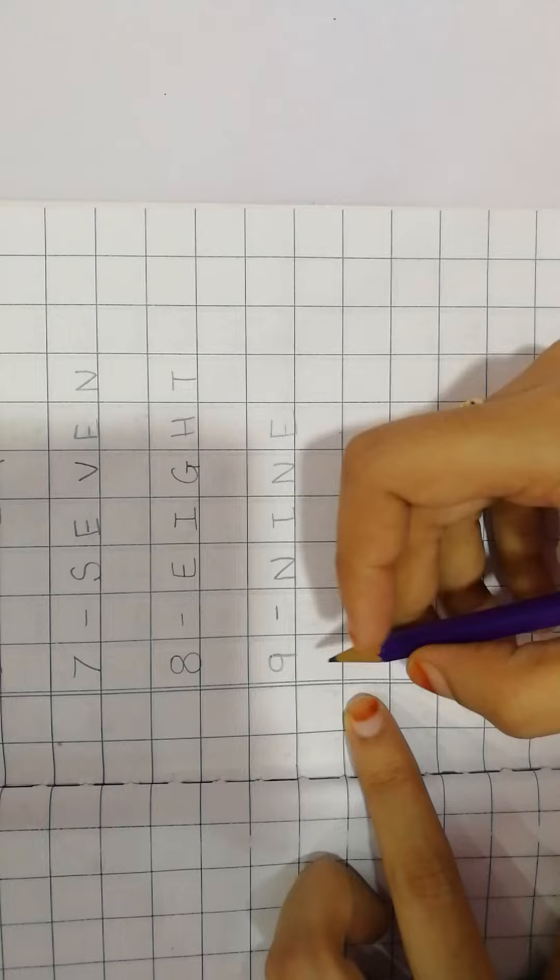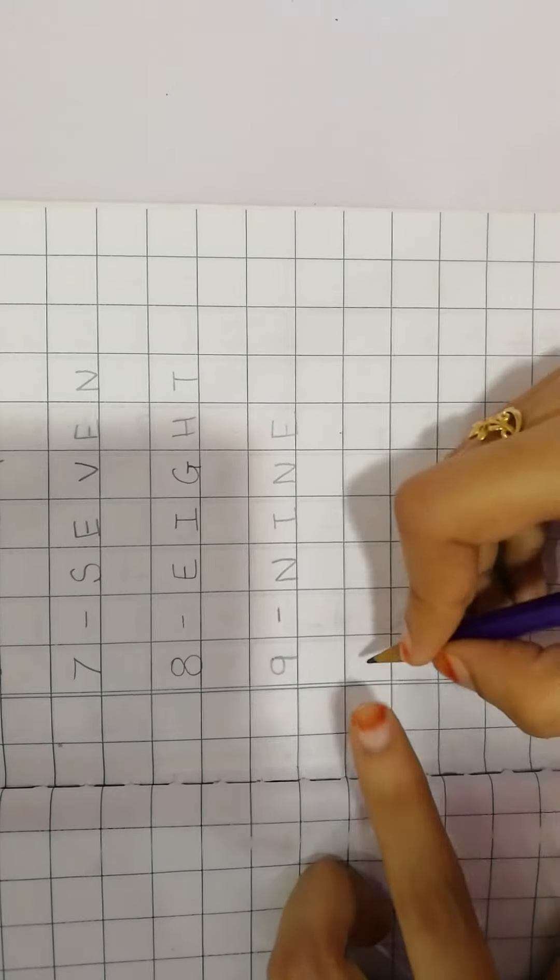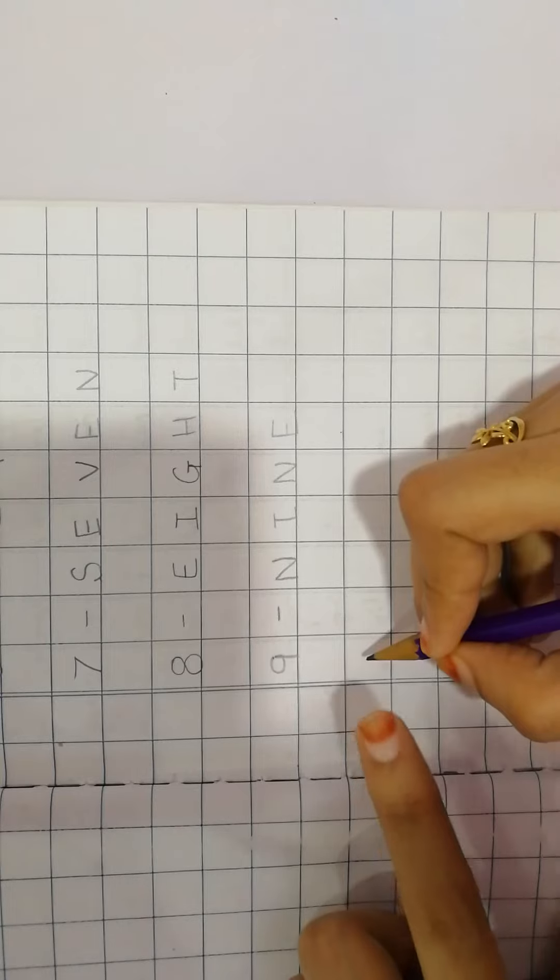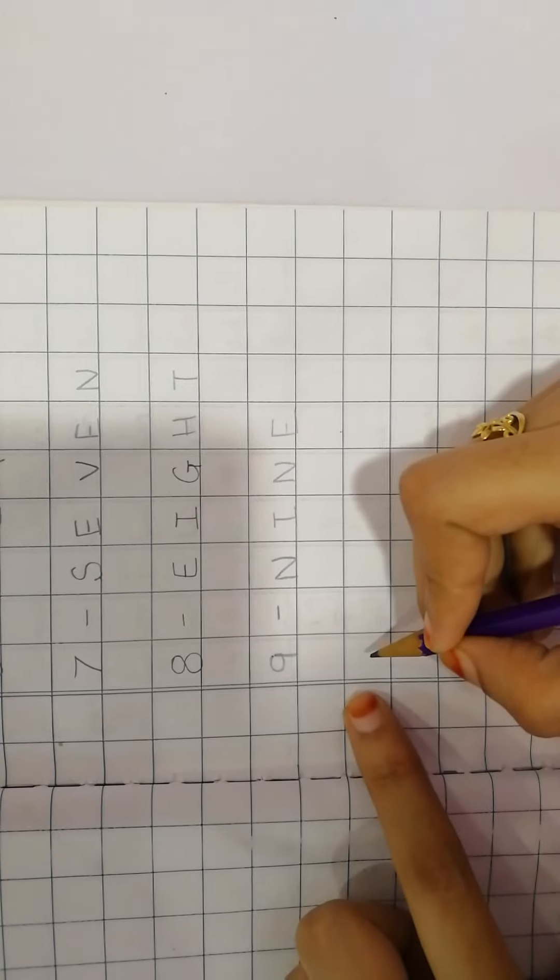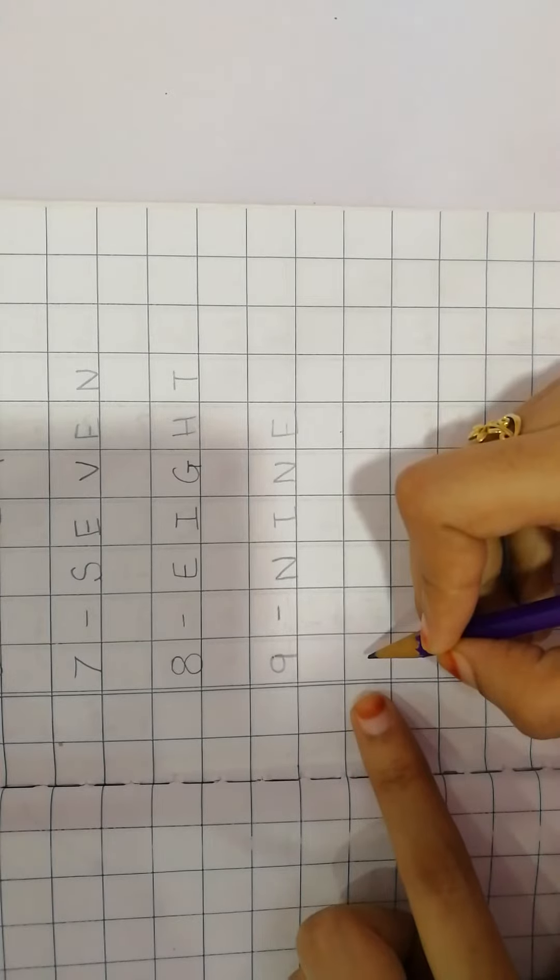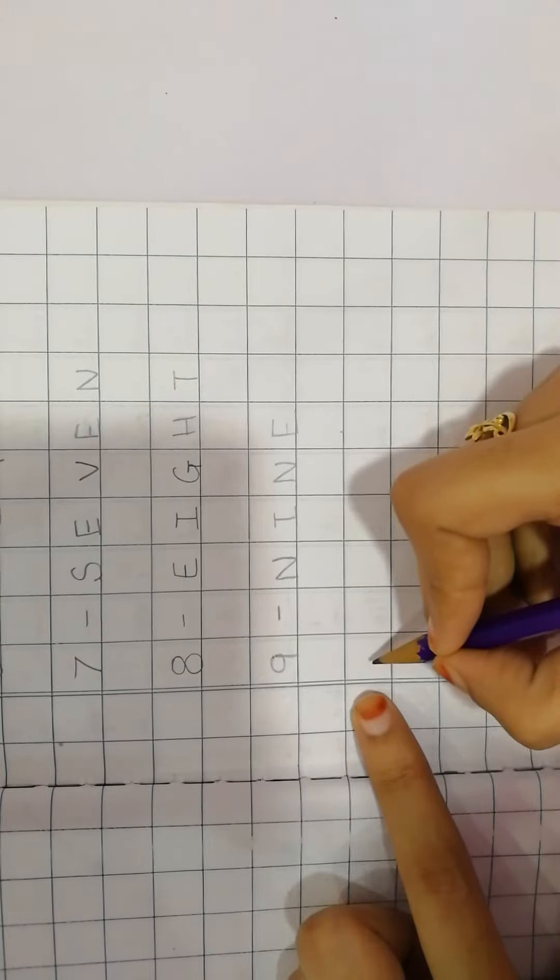So are you ready children? Take out your sharpened pencils, your book and first time ma'am ko dekho achhe se. Open your eyes, look at the screen and open your ears and listen to ma'am. Achhe se dhyan se suno. Are you ready? Come on, let's start.